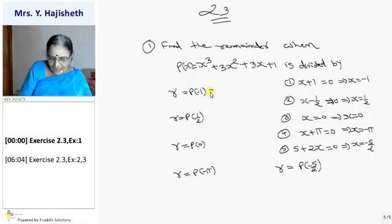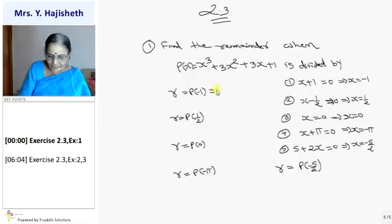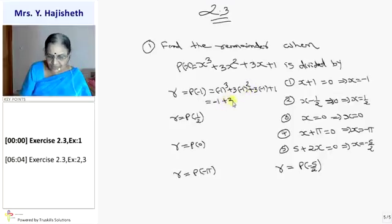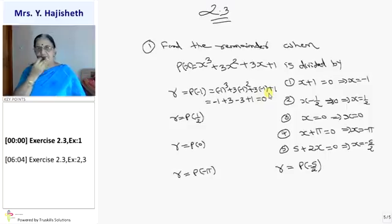For p(−1), put x = −1 everywhere: (−1)³ + 3(−1)² + 3(−1) + 1. That gives −1 + 3 − 3 + 1 = 0. So the remainder is 0, which means x + 1 is a factor of p(x).